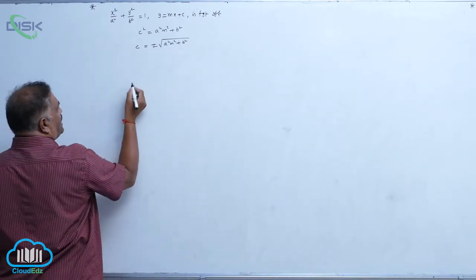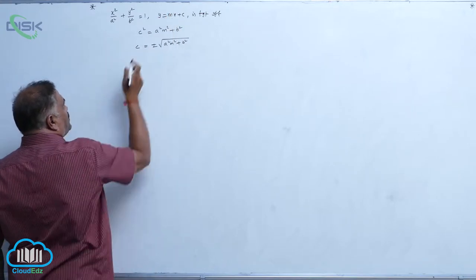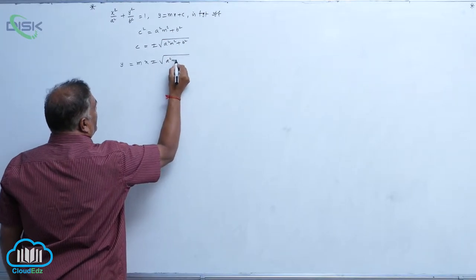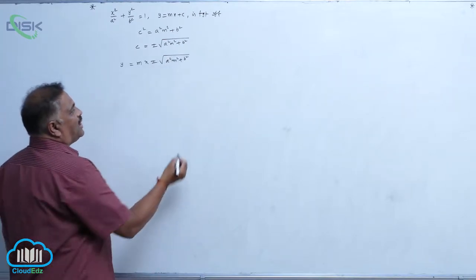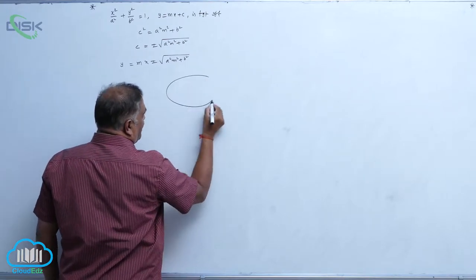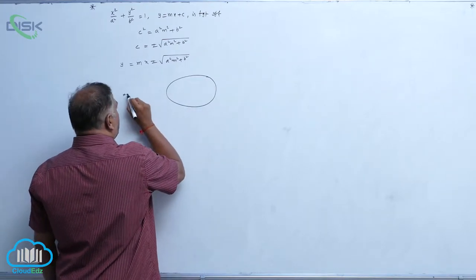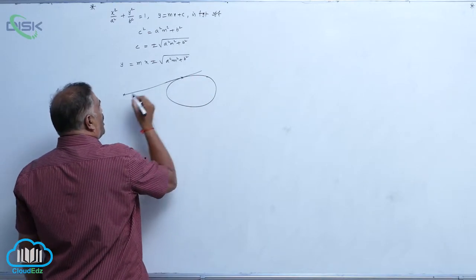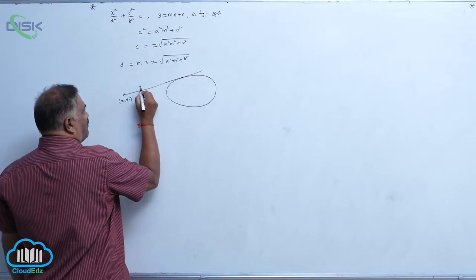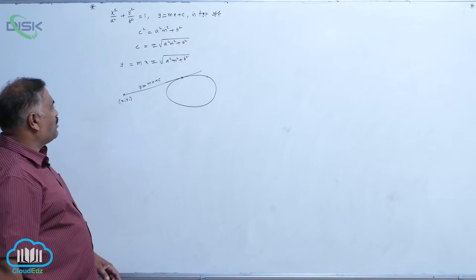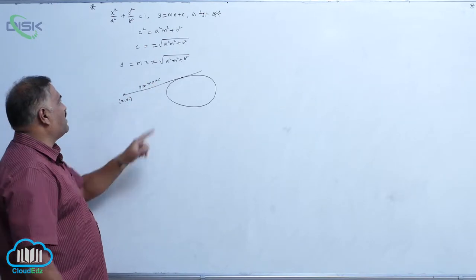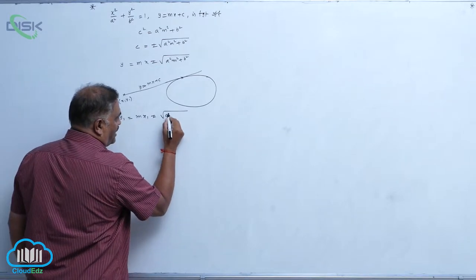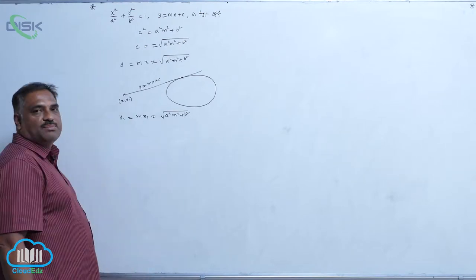Now substitute this value of c: y = mx ± √(a²m² + b²). Now if this is your ellipse equation, consider a straight line passing through some point (x₁, y₁): y = mx + c. We can claim that this line passes through (x₁, y₁), so y₁ = mx₁ ± √(a²m² + b²).